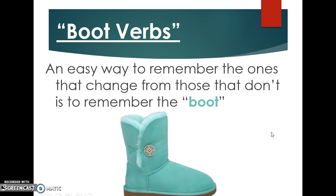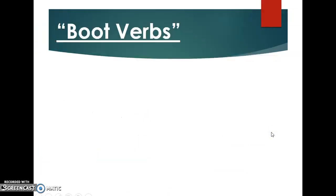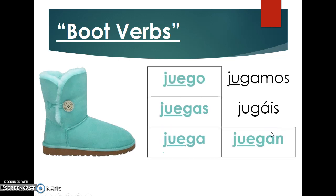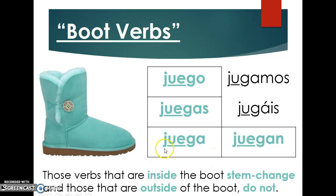Stem changers are often referred to as boot verbs, and I'm sure you've heard that before. The verbs inside the boot shape are the ones that stem change — you can see them underlined in the PowerPoint. The conjugations outside the boot, nosotros and vosotros, do not stem change. So for 'jugar,' both nosotros and vosotros retain the original U.